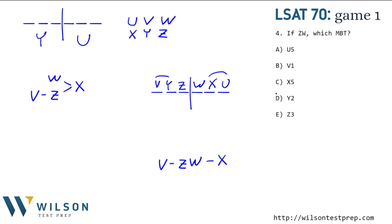So what must be true — not just could be true? U in the fifth spot could be true, not must be true. V in the first spot could happen but doesn't have to be true. X in the fifth spot doesn't have to be true. Y in the second spot doesn't have to be true. Z in the third spot — there we are. We have to have Z in the third spot. So E is the correct answer.